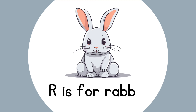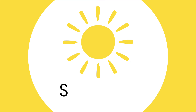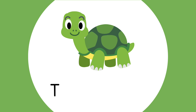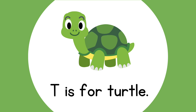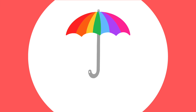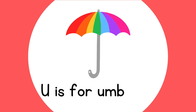R is for Rabbit. S is for Sun. T is for Turtle. U is for Umbrella.